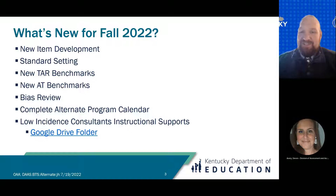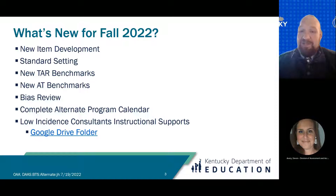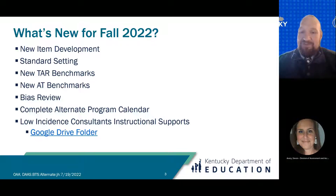We have also set new standards with the assistance of panels of content experts across the state, which has resulted in new TAR and AT benchmarks. Those benchmarks still have a few levels of approval to make it through before we can release them publicly. Also upcoming, we will be having a bias review of newly created test items in August. This is a process where we convene community, industry, and other individuals to review test questions for bias — for example, how different regions of the state may refer to a soft drink, such as 'pop' versus 'soda.'